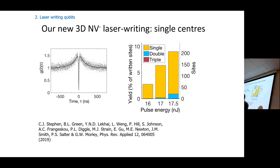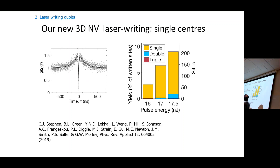This measurement is an autocorrelation function showing that we're looking at single NV centers. At time zero, the system cannot emit two photons simultaneously — the function dips below one-half — confirming we have a single NV center. Here's some statistics: we can achieve around five to ten percent yield of single NV centers placed where we want them, and we've verified this across many sites.